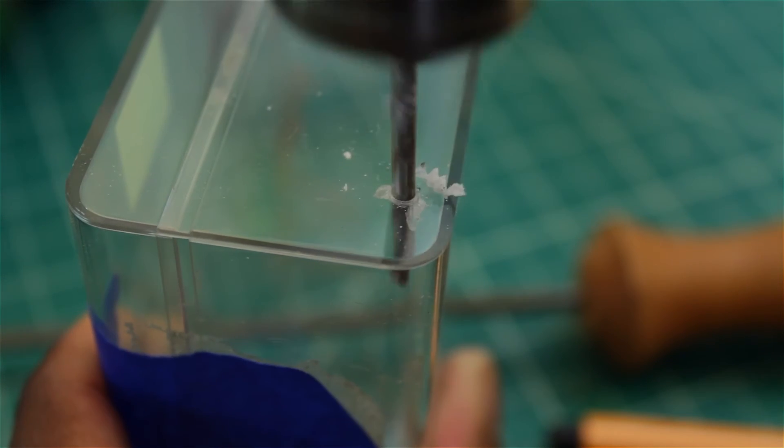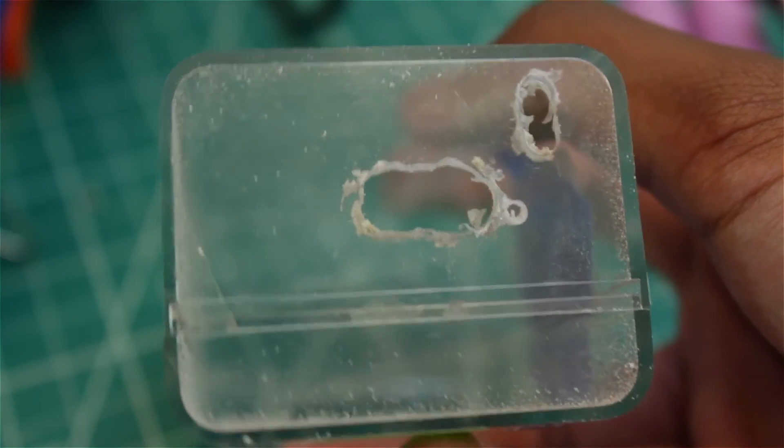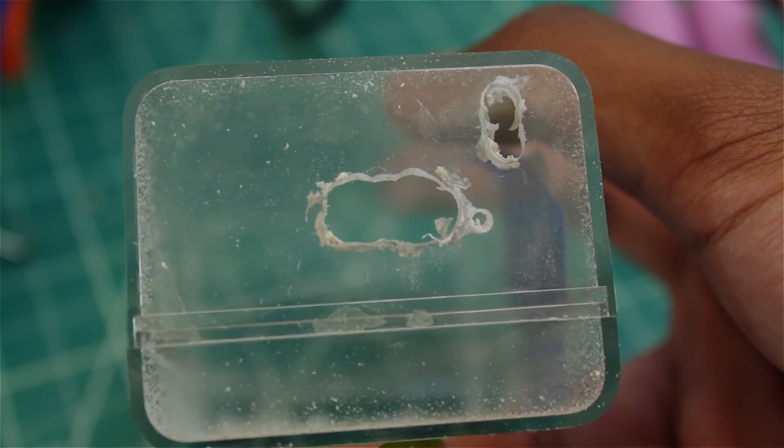Now put everything in your case and mark the spots for drilling. I drilled the spots and used a round file to extend the holes to create ports for the micro-USB and the normal-sized USB.